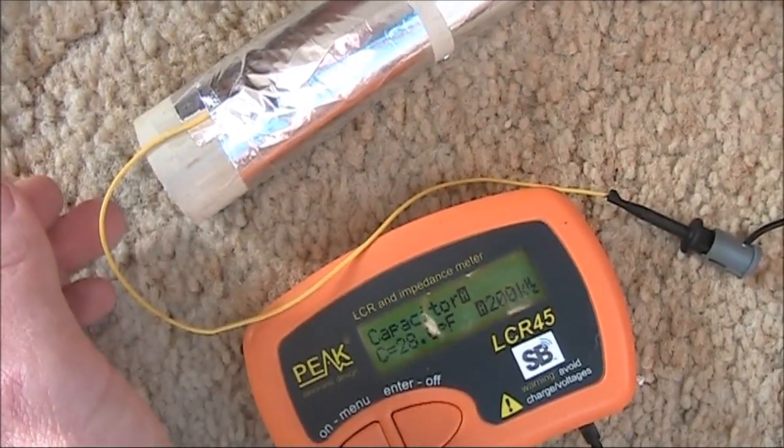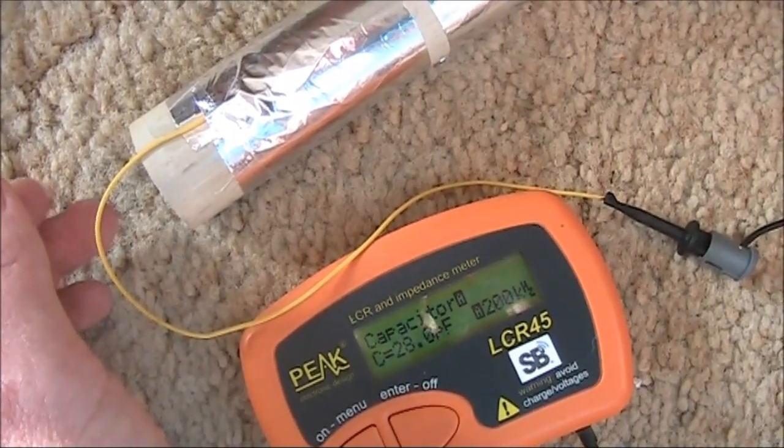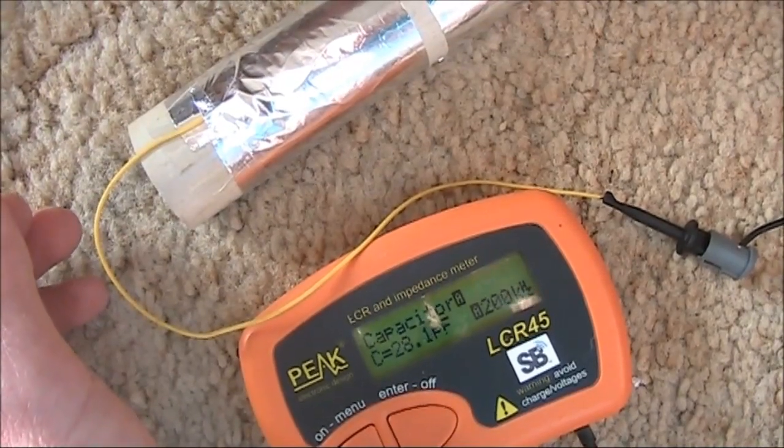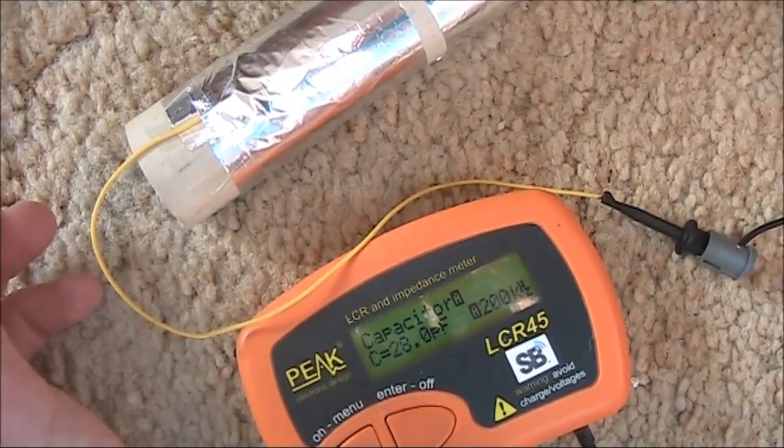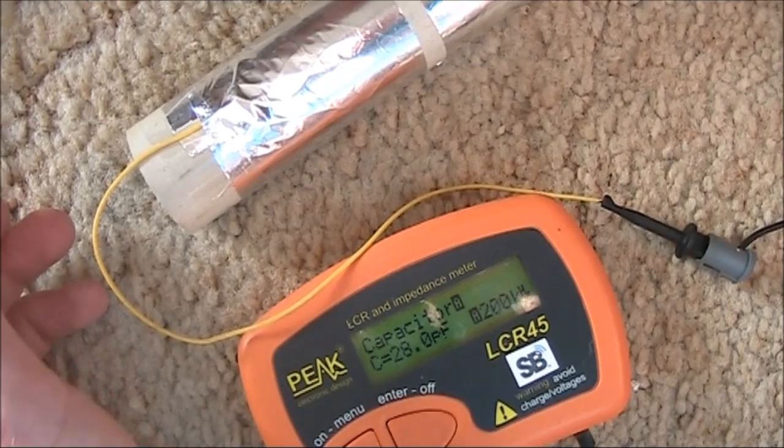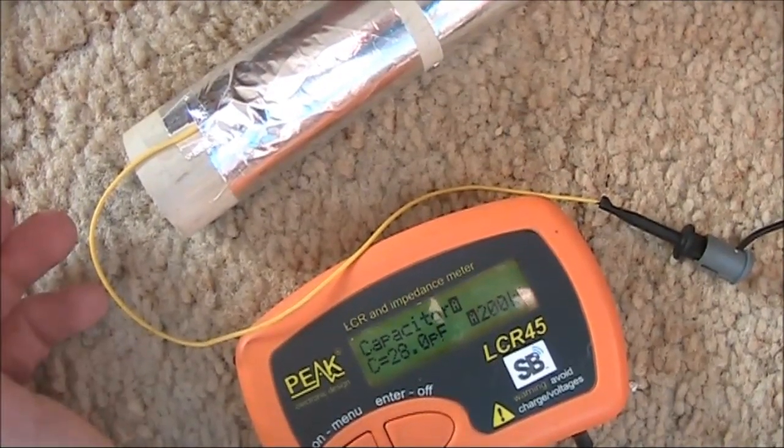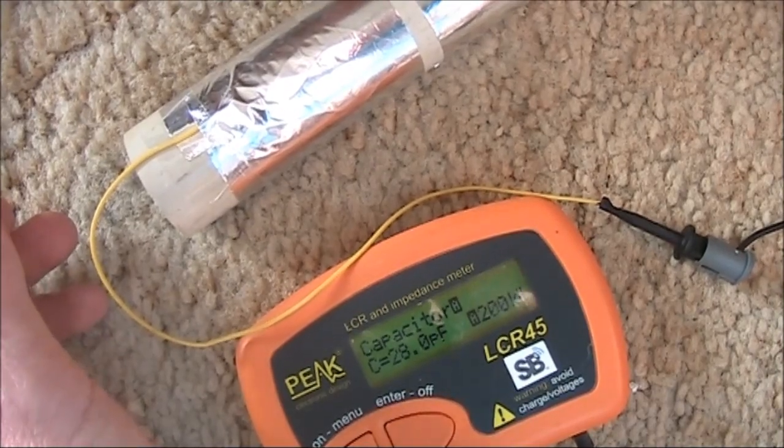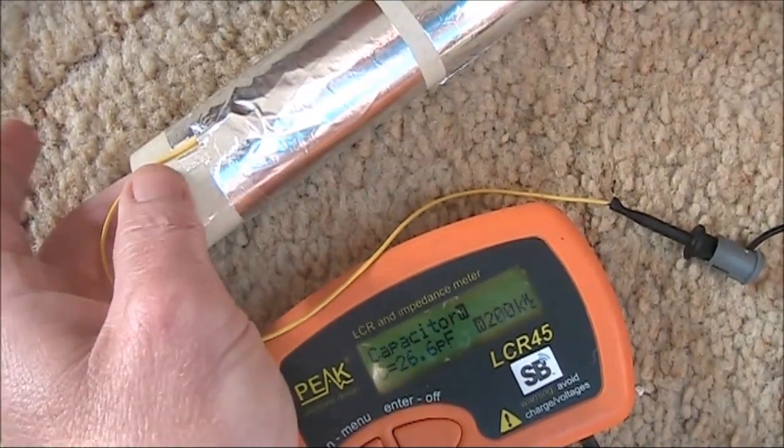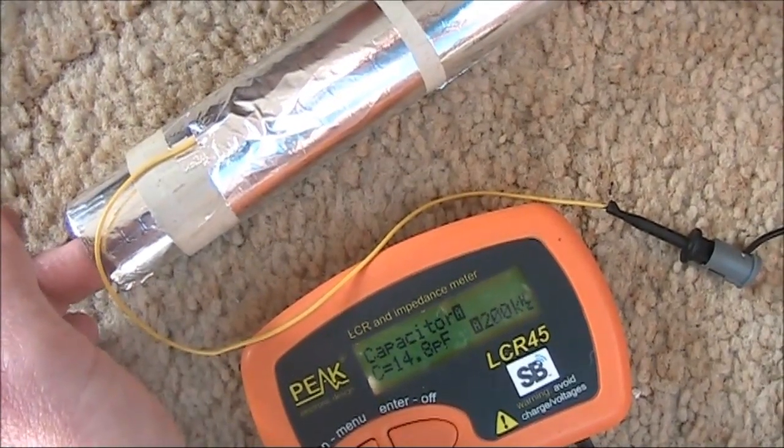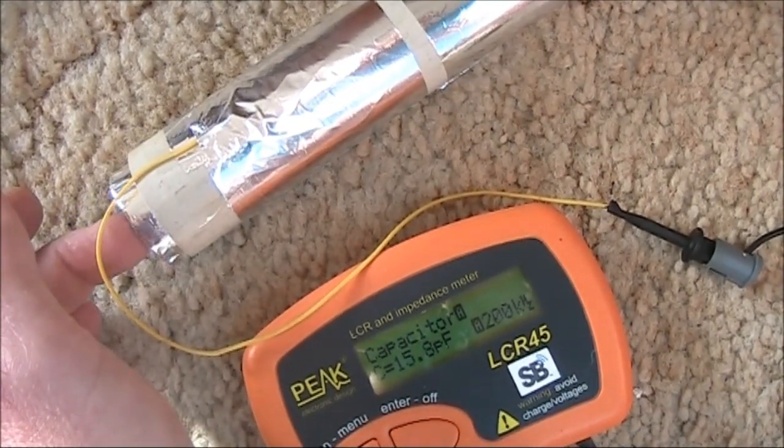But if you had it in parallel with a larger fixed value of capacitor, say you had a bank of capacitors like 22, 47, 68, 100, 120, 150 picofarads, and you had them in parallel with this, you'd be able to get a decent range. And that would also apply for an antenna coupler for QRP.